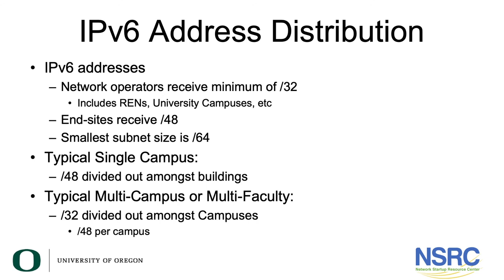How are IPv6 addresses allocated? IPv6 addresses are allocated exactly the same way as IPv4 addresses. The difference is we have unlimited amounts of IPv6 address space, and as such we don't have any run-out policies. Network operators receive a minimum of a /32, which includes ISPs and university campuses. End sites receive a /48. The smallest subnet size allocated is a /64.